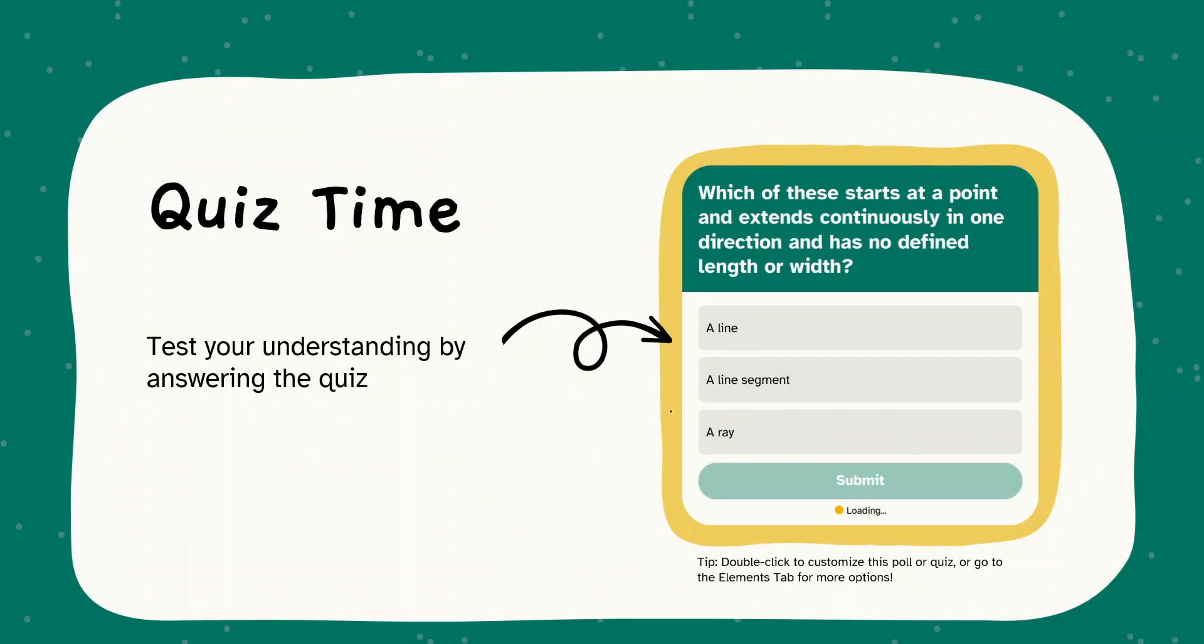It's time for quiz. Test your knowledge by answering the quiz. Which of this starts at a point and extends continuously in one direction and has no defined length? Is it a line or line segment or a ray? The answer is ray because it is in one direction and it extends infinitely in only one direction but starting at a point. For example, here if you consider O and A. If starting point is O and this would denote it up, then OA is a ray.